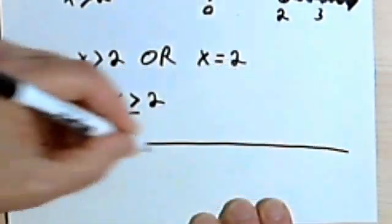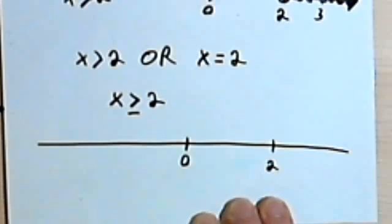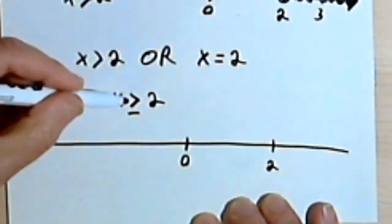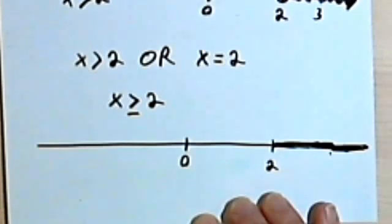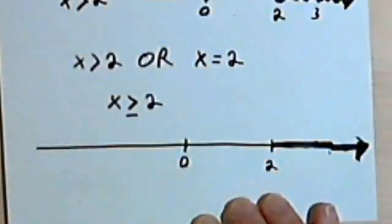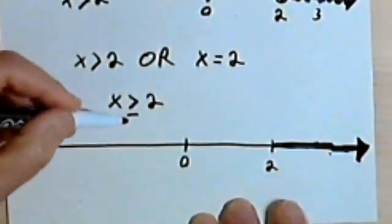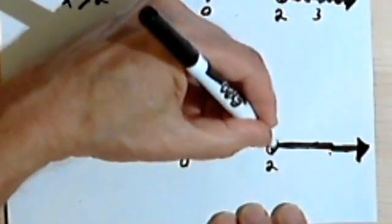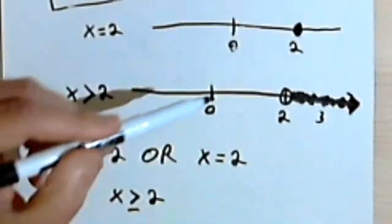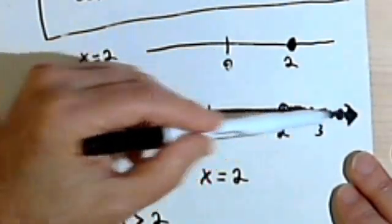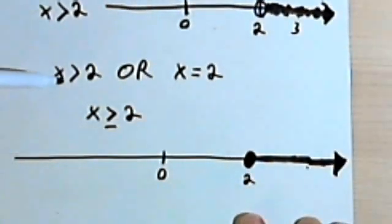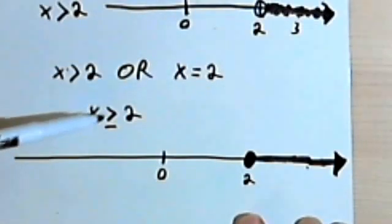Now if I want to show that on a number line — here's my number line, here's where the 2 is — all the places where x is greater than 2, the greater than part, are going to be over here: 3, 4, 5, 2 and a half, and this line keeps going with an arrow. But it could also equal 2, so instead of putting an open circle, I'm going to put a closed, filled-in circle, because that's what I use when x equals 2. So I combine the closed circle and the heavy line, and this gives me x is greater than or equal to 2.